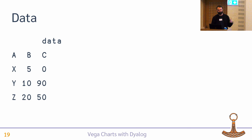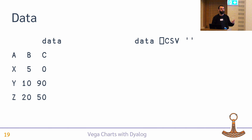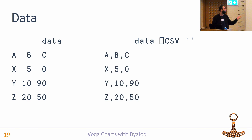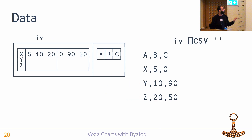The nice thing in Vega-Lite is that instead of the inefficient list-of-objects format, you can provide a string that's just CSV text. So we use quad CSV to convert our data tables into CSV text and put that into the spec, which is much more efficient. You also get the added bonus that inverted tables just work the same way.